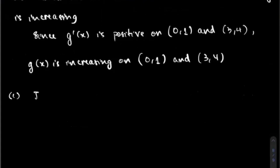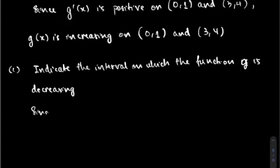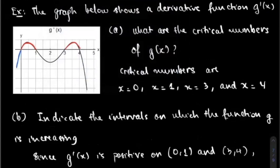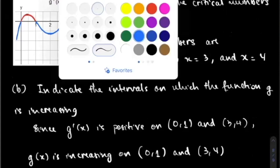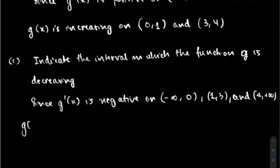Part C indicates the intervals on which the function G is decreasing. The function is decreasing when G prime of X is less than zero, or negative. Going back to the graph, there are three intervals: from negative infinity to zero, the derivative is less than zero; this part of the derivative is also less than zero; and this part as well. So since G prime of X is negative on the intervals from negative infinity to zero, from one to three, and from four to positive infinity, G of X is decreasing.